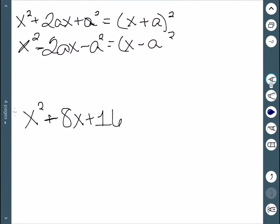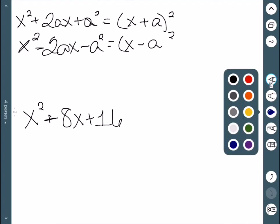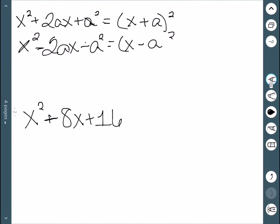Next is perfect squares. These are a little bit harder to pick up on. We have x squared plus 2ax plus a squared, or x squared minus 2ax plus a squared. So the idea here is we need to realize that the first and the last term are perfect squares, and the middle term are those two terms times 2.